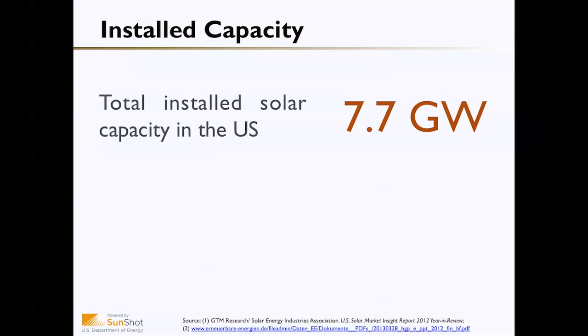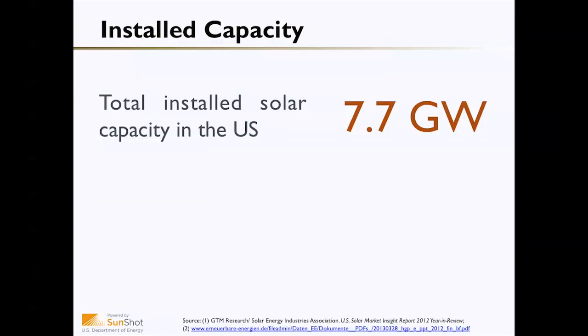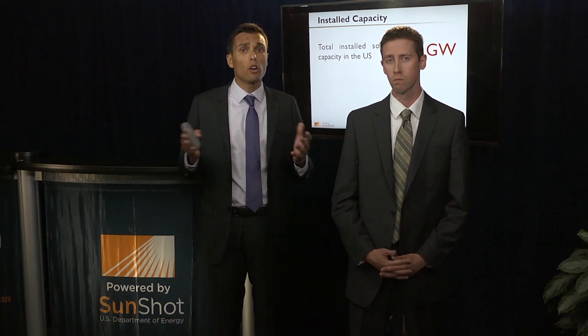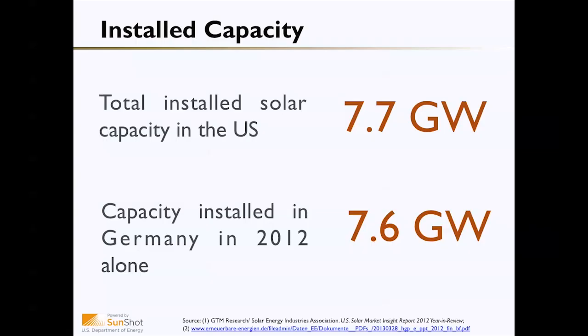Not only does Germany have more solar than the U.S., they're growing at an incredibly rapid pace. To give a sense of this: the entire installed capacity of the U.S. solar industry at the end of 2012 was 7.7 gigawatts — accumulated over our entire history of 30 to 40 years. Compare this to Germany, which installed 7.6 gigawatts in a single year. So in 2012 alone, Germany was able to install the same amount of solar that the U.S. has installed over its entire history.